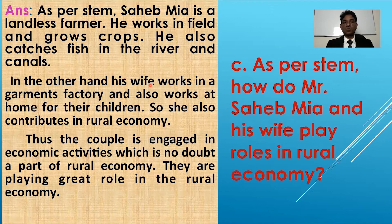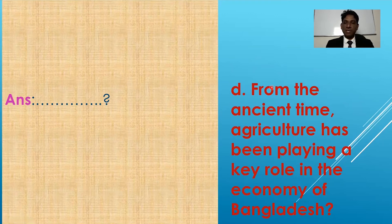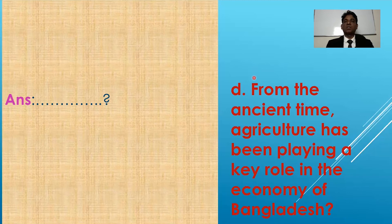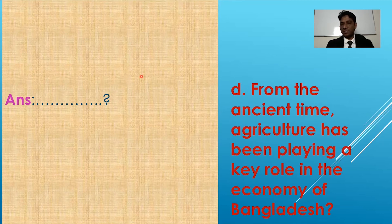Now, students, the last question here. From ancient times, agriculture has been playing a key role in the economy of Bangladesh. Ancient means the primitive age or old age. For question D, you have to read your book and try on your own to find out the answer. I haven't given the answer here. You have to write it in your SW copy - your SW number will be 9 - and then send it to your subject teacher.